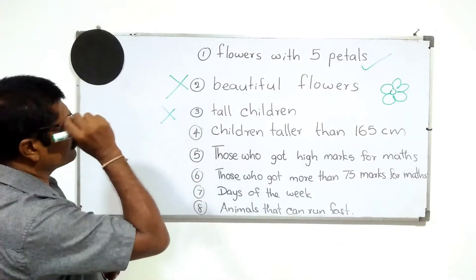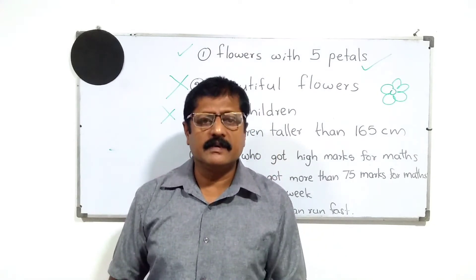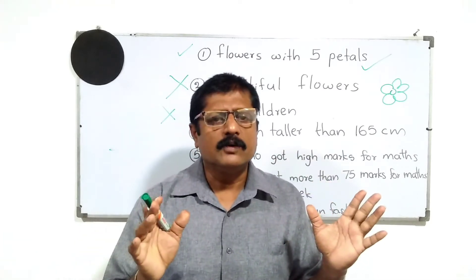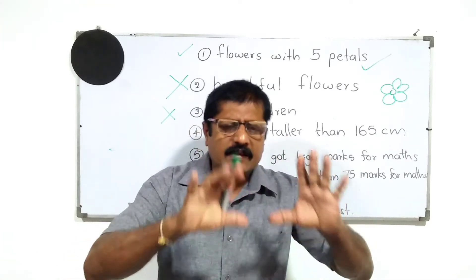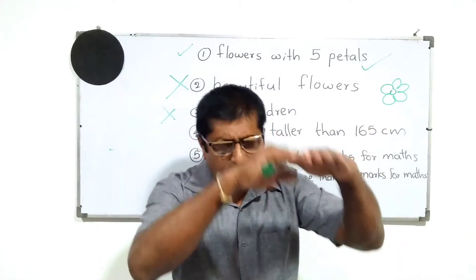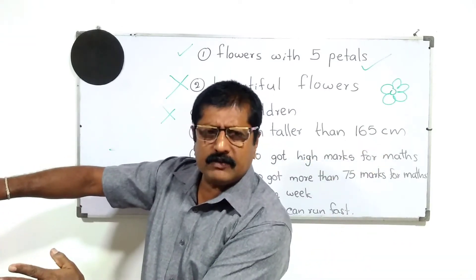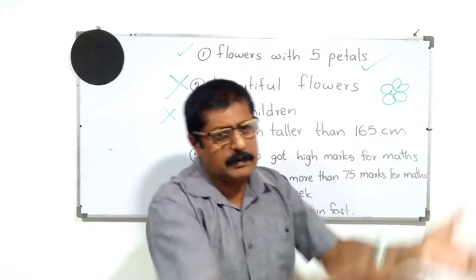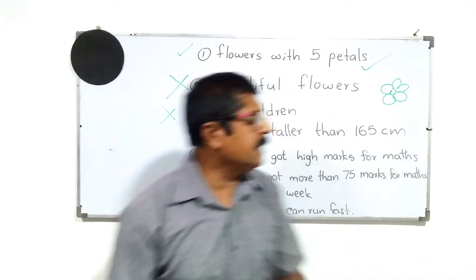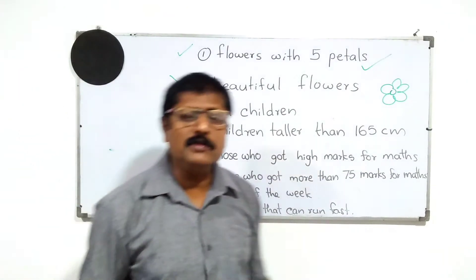Now consider 'children taller than 165 centimeters.' This is very clear — whoever selects, no matter who, will select the same group. You measure the height: if it is 165 or less, that person is not a member; if it is more than 165, they are a member. Any person will select the same members. Therefore it is a set.